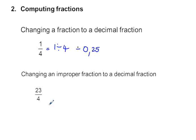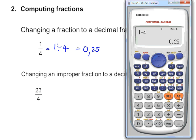We do the same thing with improper fractions. So we've got 23 divided by four equals your improper fraction. Change it to a decimal and it is five comma seven five.